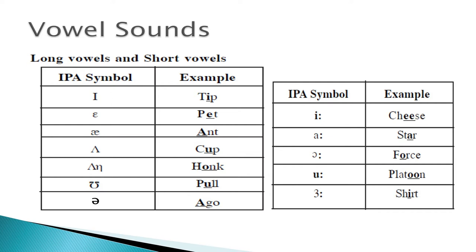The next elongated vowel sound is the er sound, where the R is not prominently pronounced — you simply elongate the vowel. For example, you say shirt, not a hard R version. Examples include shirt, curt, burn, birth, and bird.